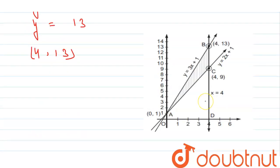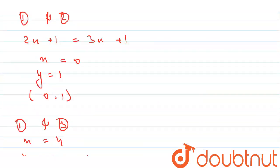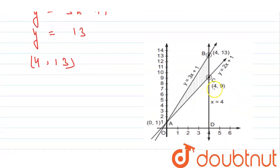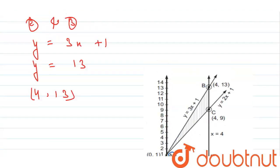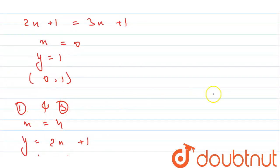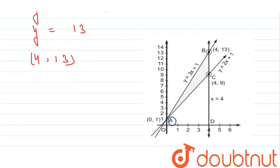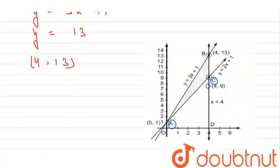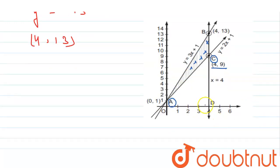Let me draw the graph. y = 3x + 1 is the second line and y = 2x + 1 is the first line; they both intersect at (0, 1), which we name point A. The first and third lines intersect at (4, 9), which we name point C. The second and third lines intersect at (4, 13), which we name point B. We need to find the area of this shaded region. The line x = 4 is parallel to the y-axis.